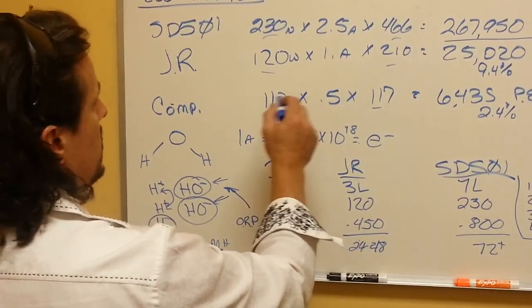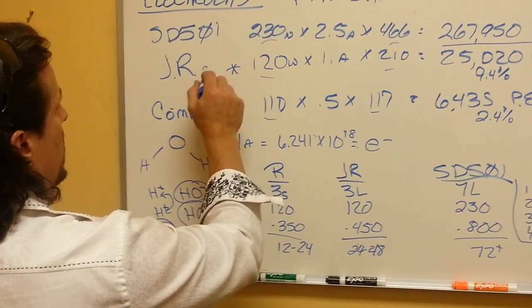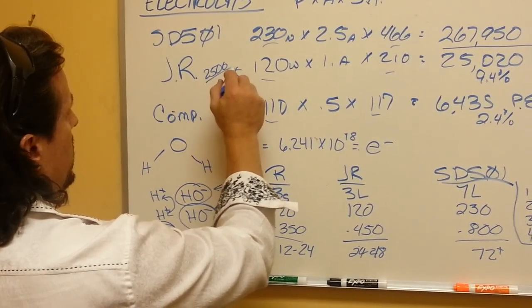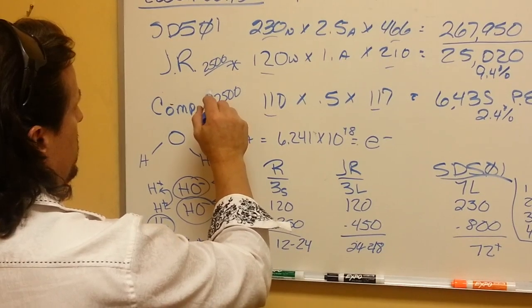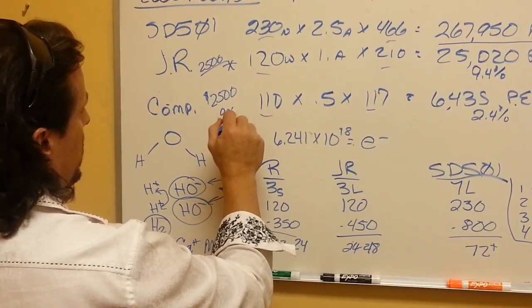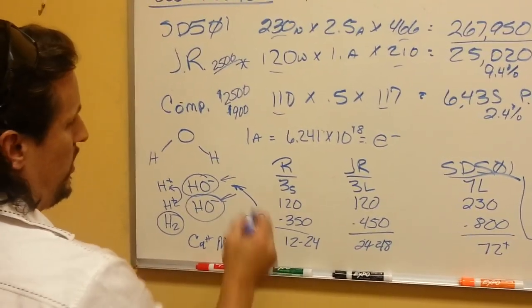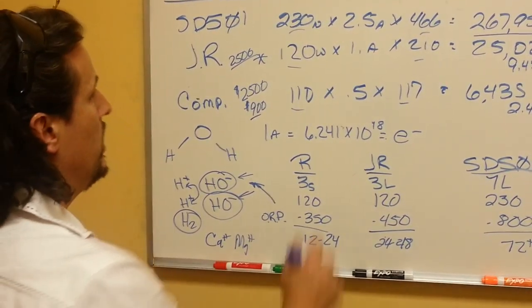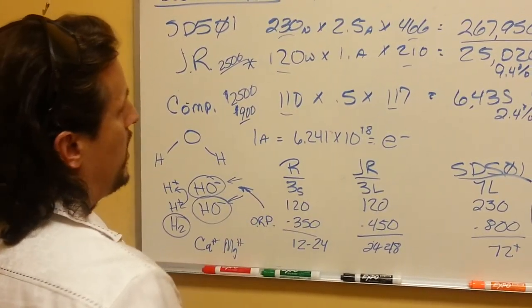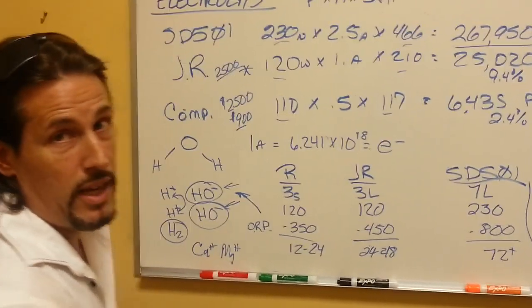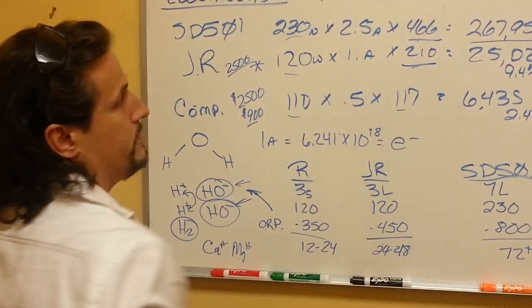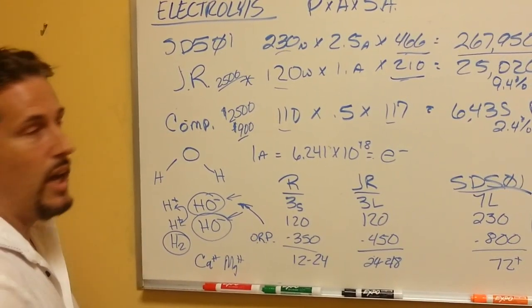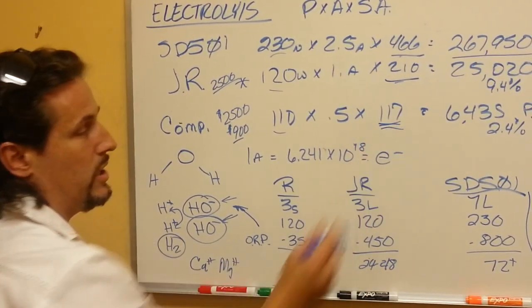But right here, you're looking at a machine that's about $2,500 compared to other machines that are about $2,500. If you look at the $900 machines, you get what you pay for. You're looking at low-grade titanium, low-grade platinum. These here use medical-grade titanium and medical-grade platinum in these plates.